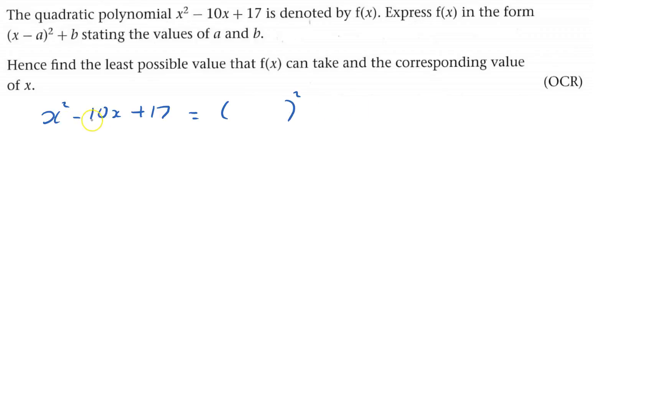So I've got to get x squared, so I'm going to have an x, and I've got to get minus 10x, so that means I'm going to have minus 5 here. And if I want to see what that comes to, x minus 5 times by x minus 5,